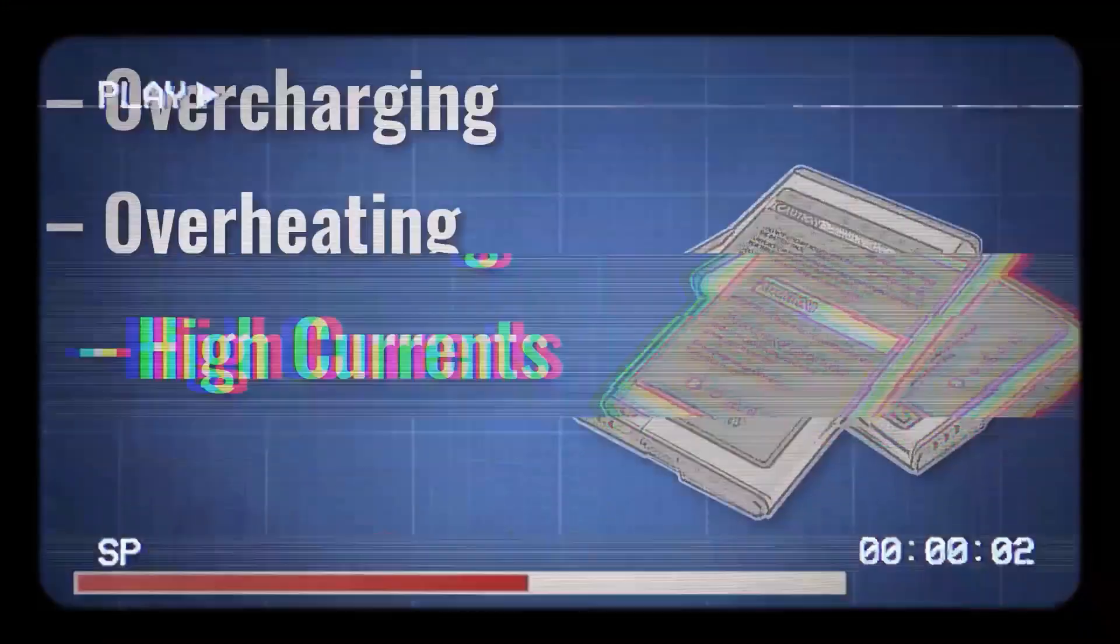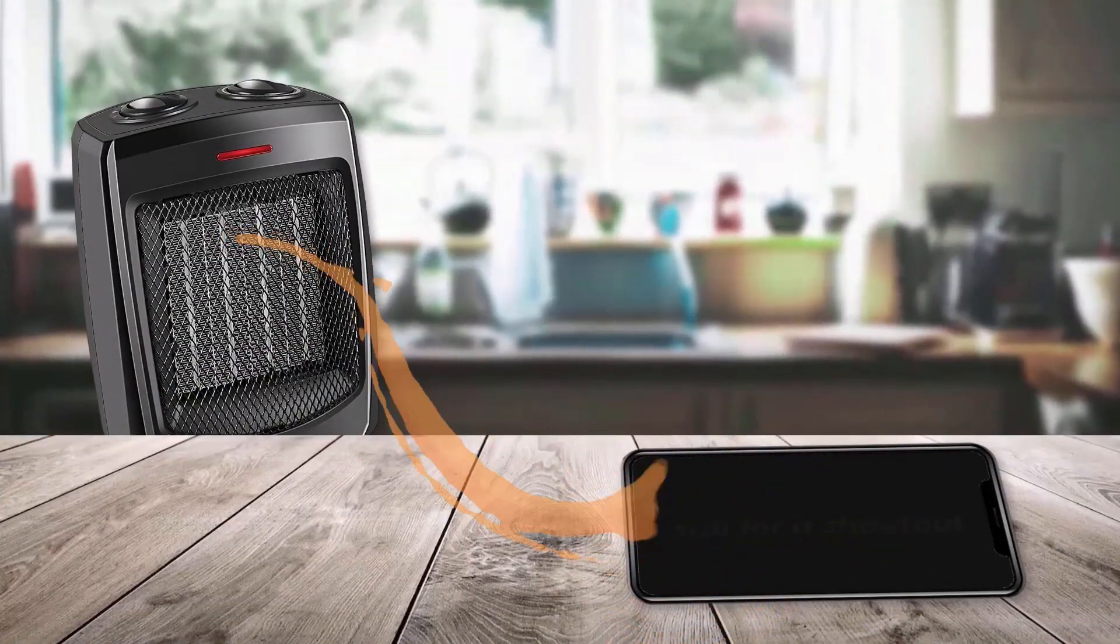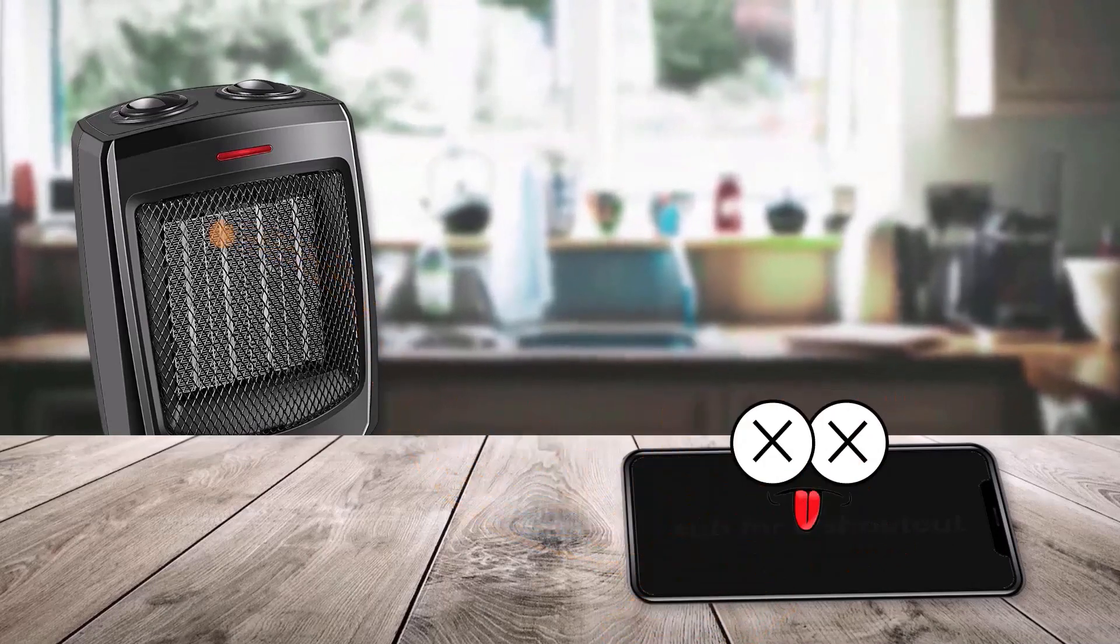However, it's a different story when it comes to overheating. Heat is a phone's biggest nemesis. Prolonged exposure to high temperatures can negatively impact the longevity of a battery.